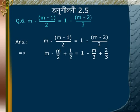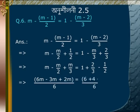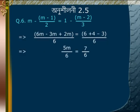Transposing: M plus M/2 plus M/3 combined with LCM of 6 gives (6M plus 3M plus 2M)/6 is equal to (6 plus 4 minus 3)/6. Multiplying both sides by 6 gives 5M is equal to 7.